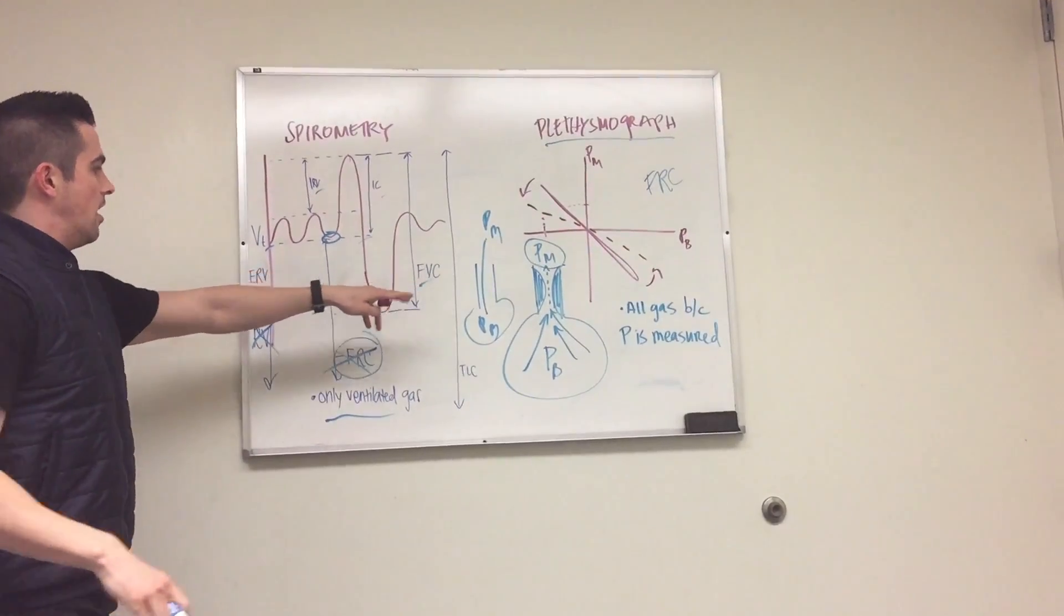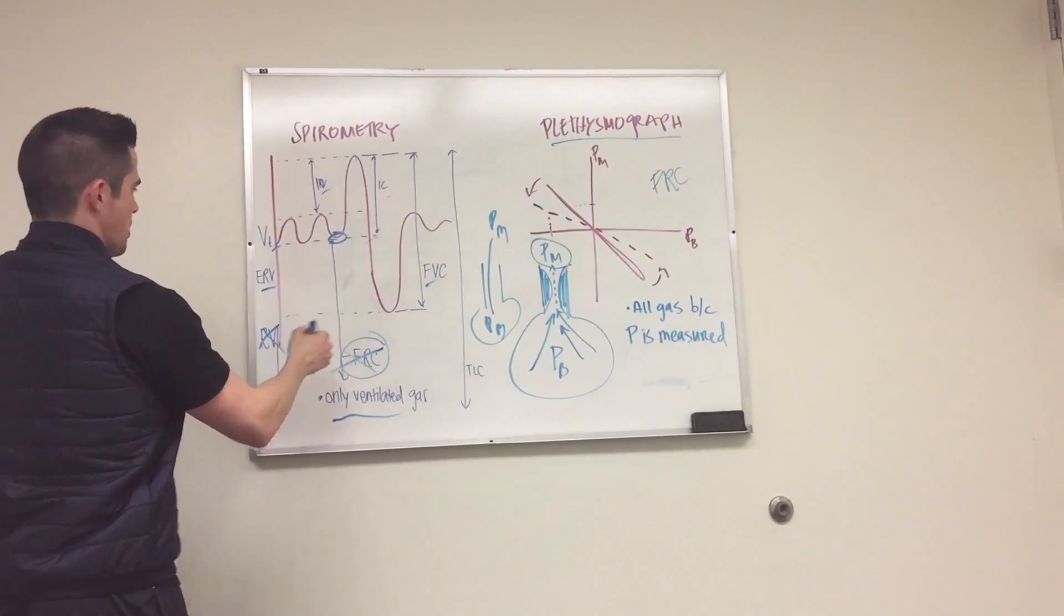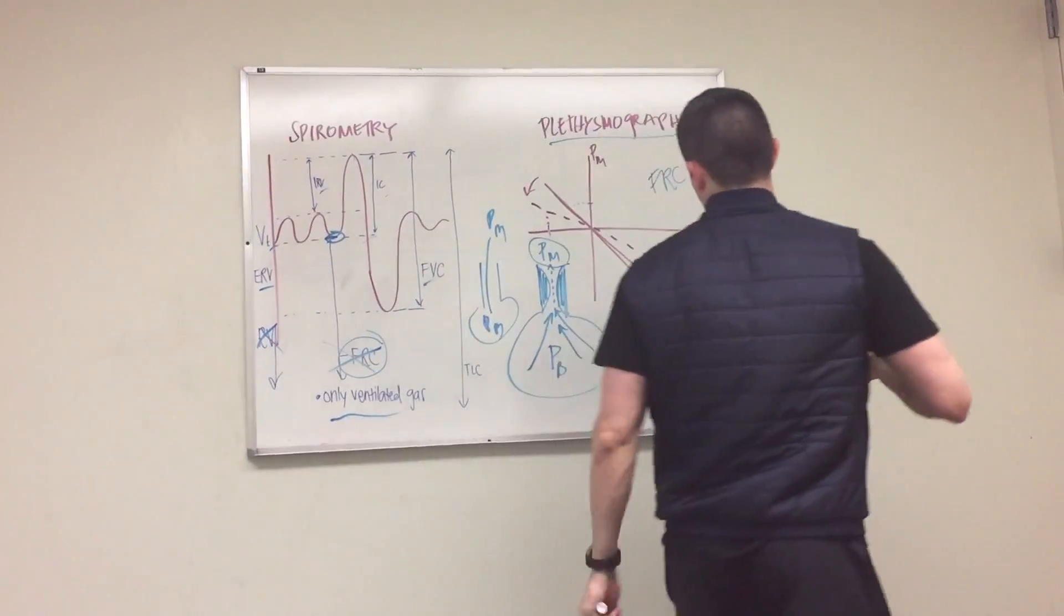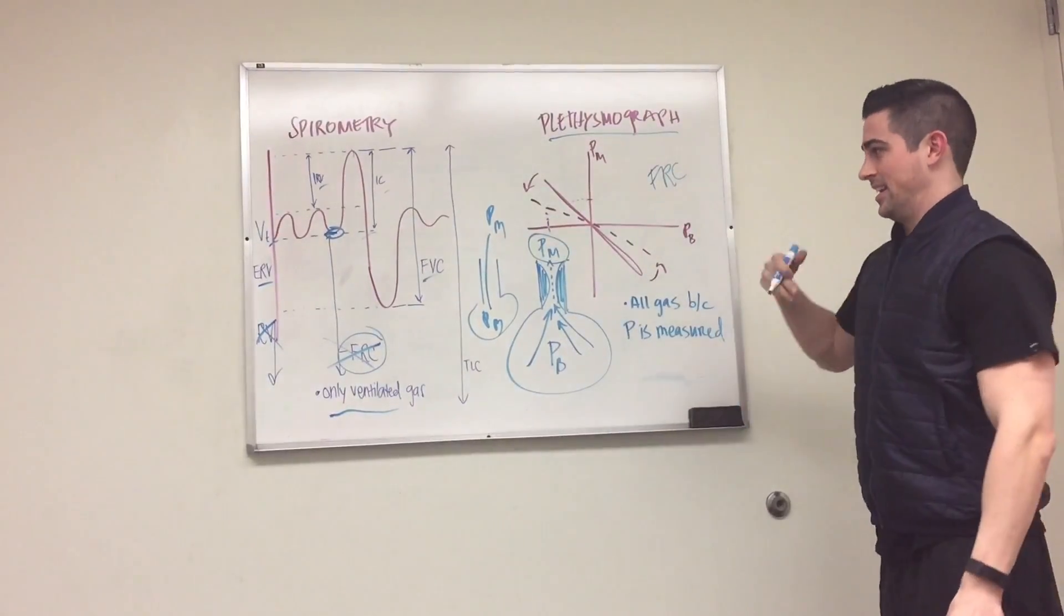You're at your FRC line. So your FRC is right here. You start the experiment at FRC and go back and forth panting in and out.